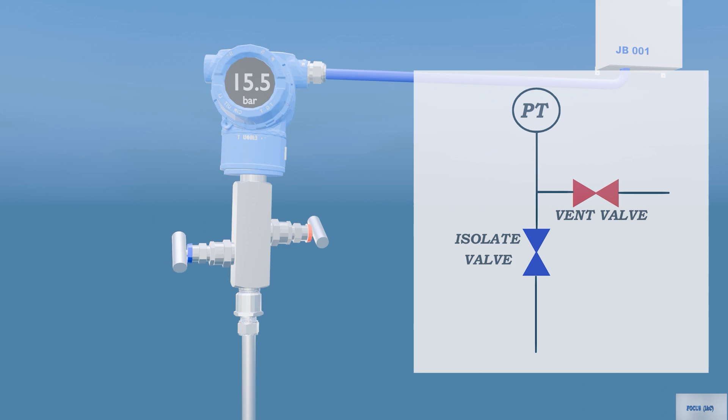In this video, we will explain how a two-valve manifold operates. During normal operation, the isolate valve between the process and instrument port is open while the vent valve remains closed.